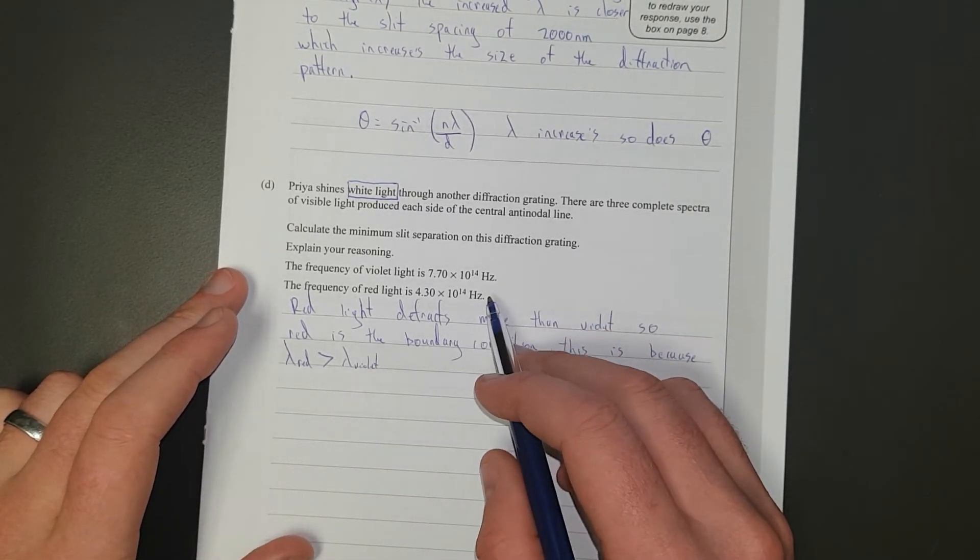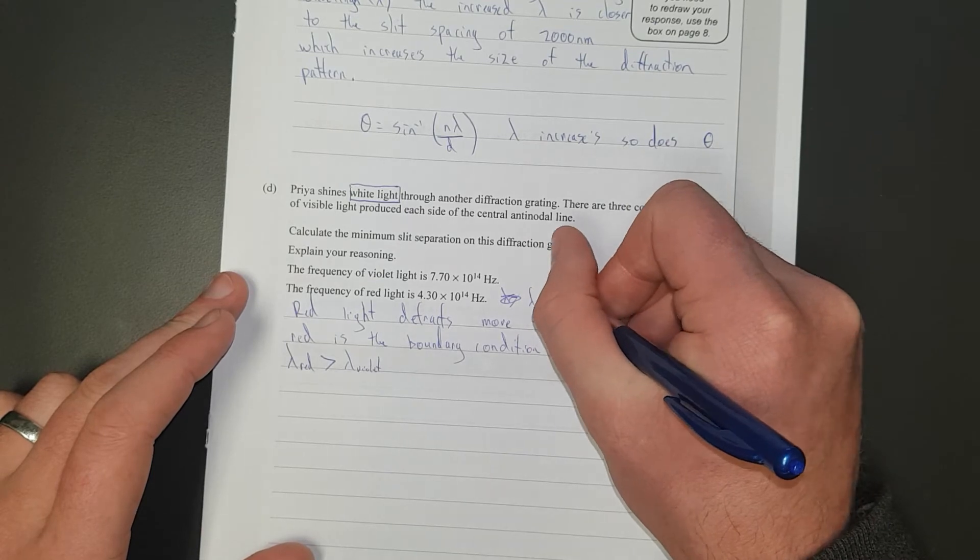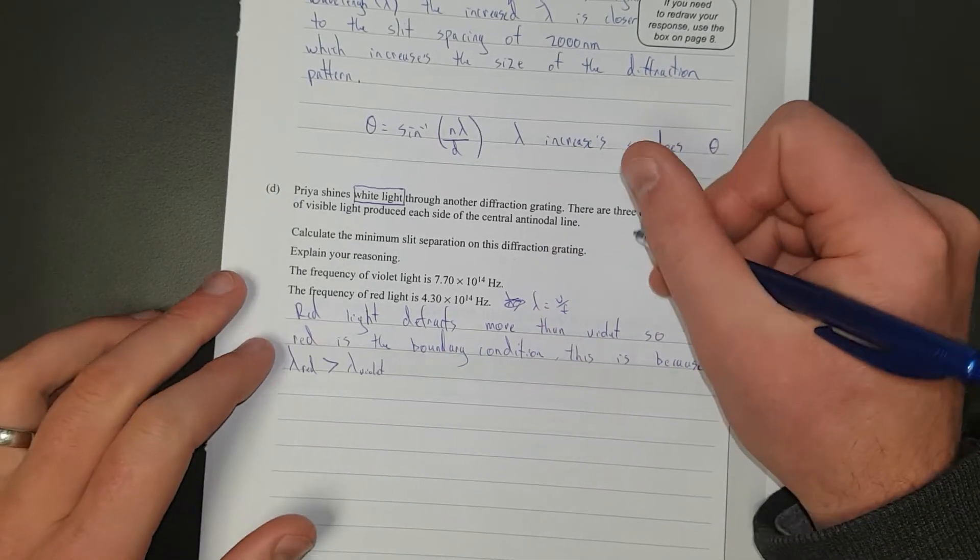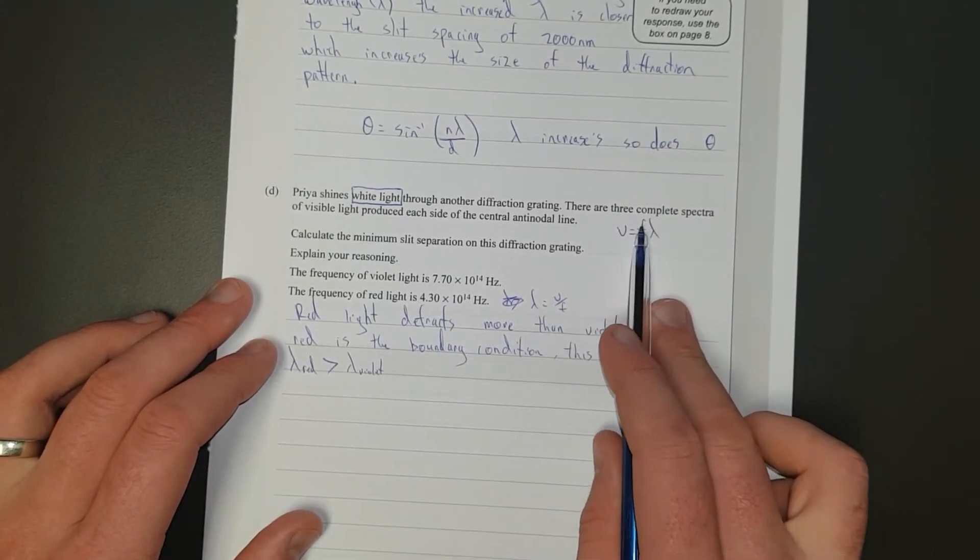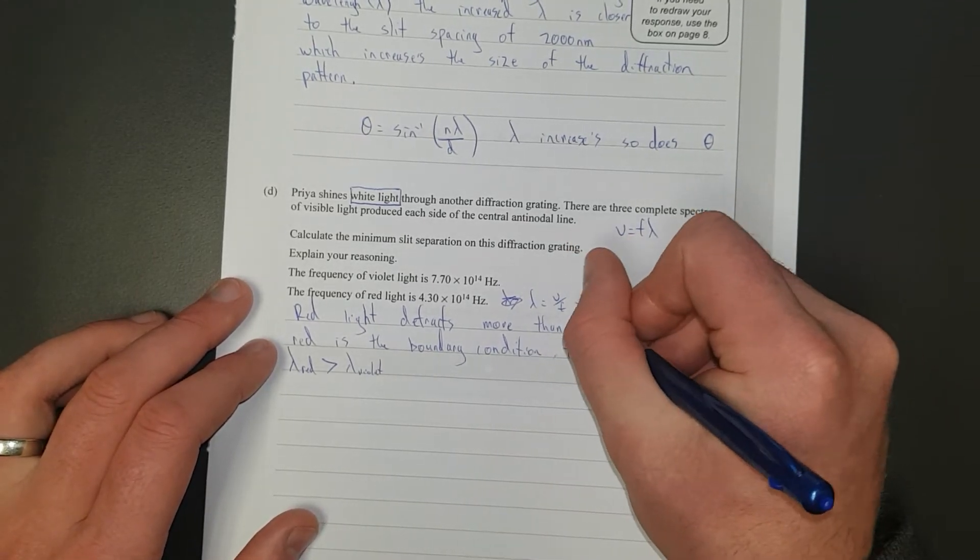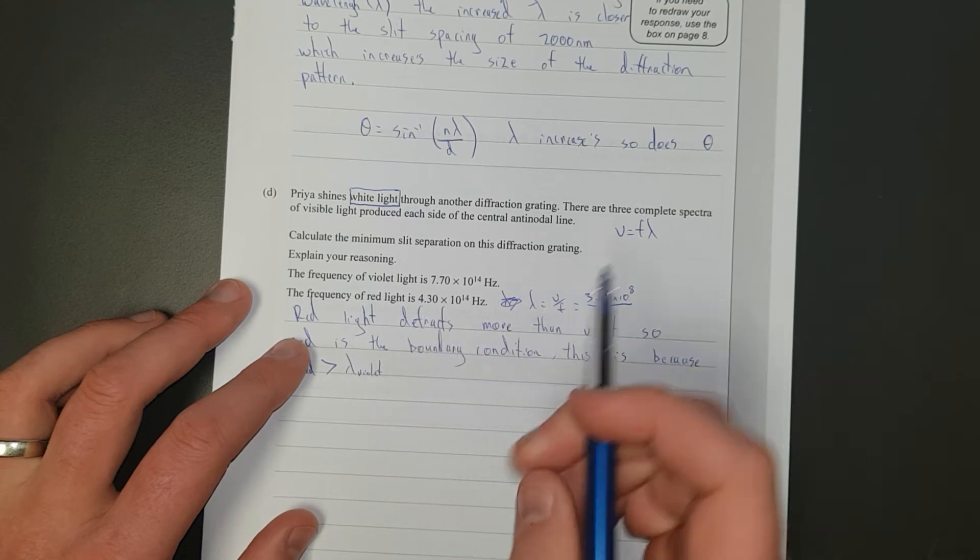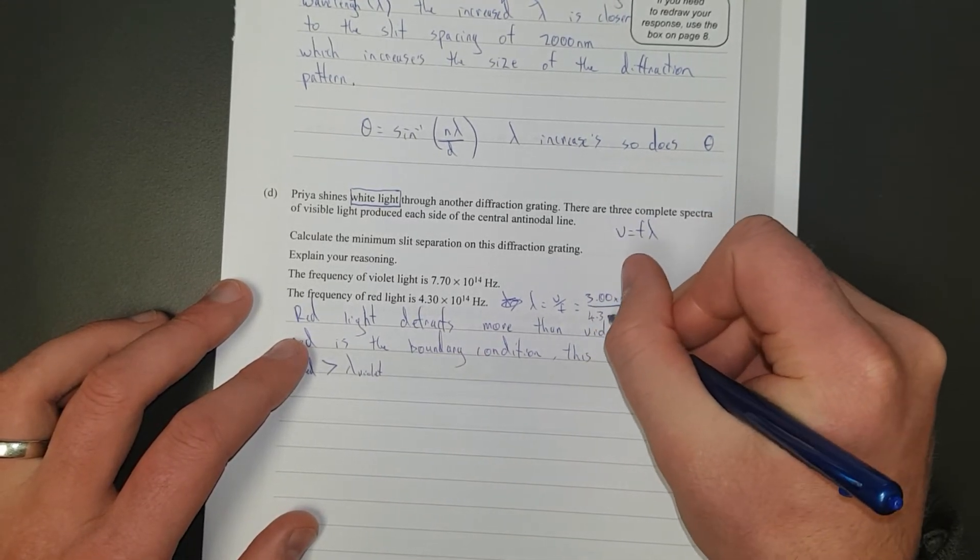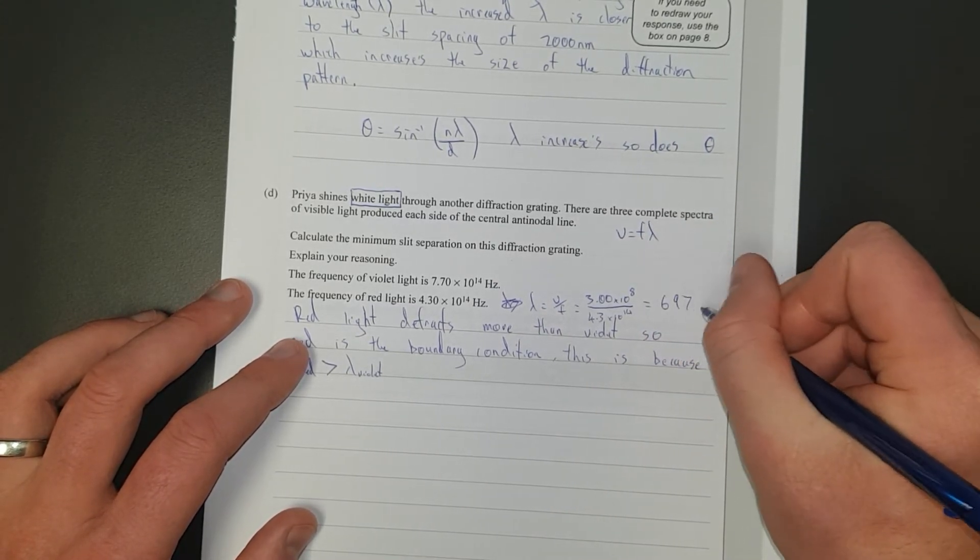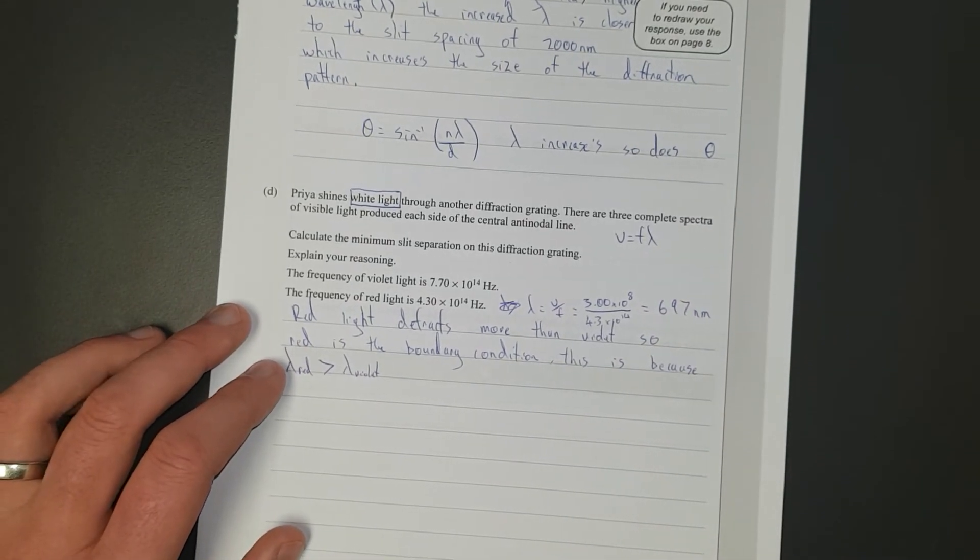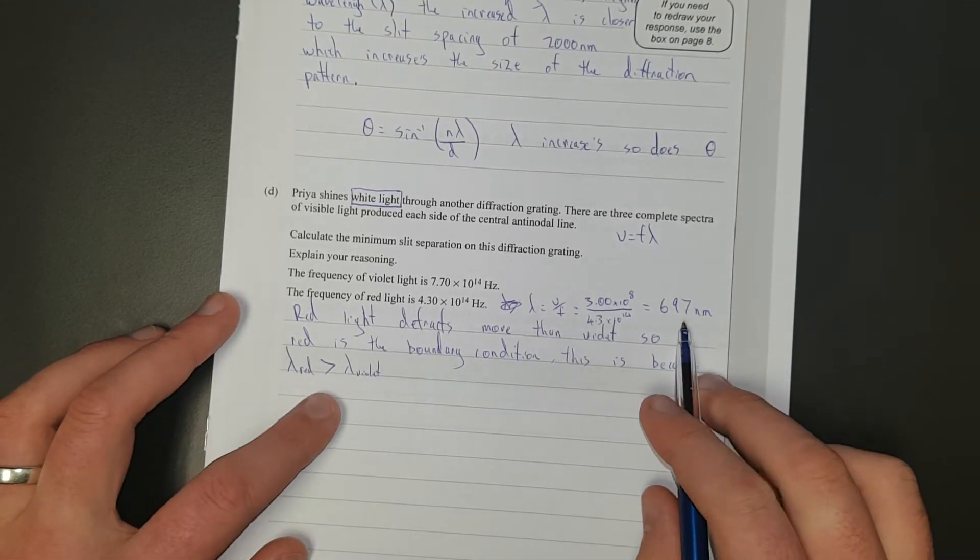We can show that quickly. Lambda equals the velocity over the frequency, that's just the wave equation rearranged, V equals F lambda. Just rearranged for the wavelength. That is going to be equal to 3.00 times 10 to the 8, that's the speed of light, divided by the frequency, 4.3 times 10 to the 14. It is 697 nanometers and that seems legit, close enough to 600. You can get some lasers that are 650, this is probably getting close to infrared.